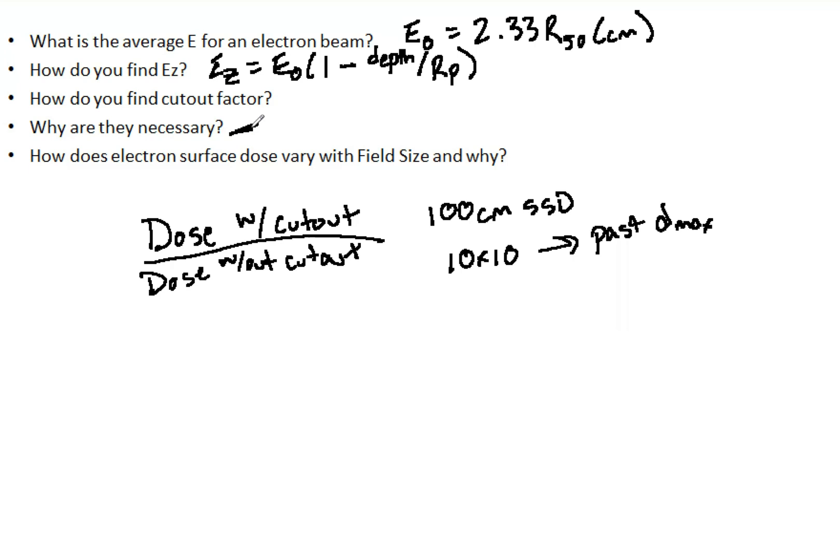That's why they are absolutely necessary when you're doing these. A lot of factors may be near one, so it doesn't make a big difference. Some can be as low as 0.8 or lower. So it's important to always do a cutout factor to verify, document it, and verify that within the treatment planning system as well.